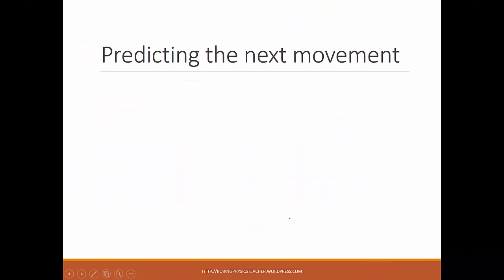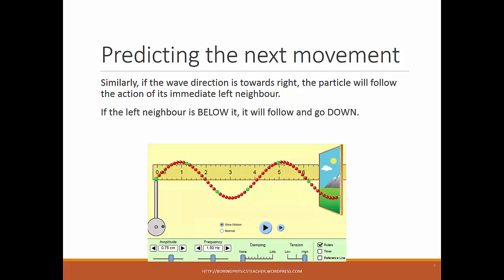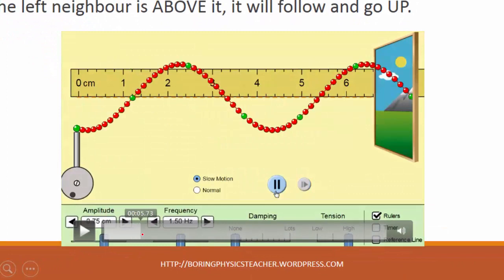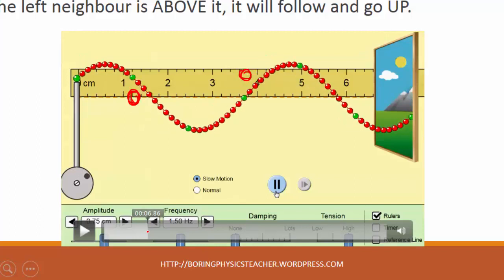So, if the wave direction is moving towards the right, the particle follows the action of its immediate left neighbor. If the left neighbor is below the particle, it will follow and go down. If the left neighbor is above it, it will go up. For example, for a particle whose immediate left neighbor is above it, we predict it will move up; for another particle whose left neighbor is below it, it will move down. In the next instant, the first moves up and the second moves down, continuing until they reach the peak and trough respectively.